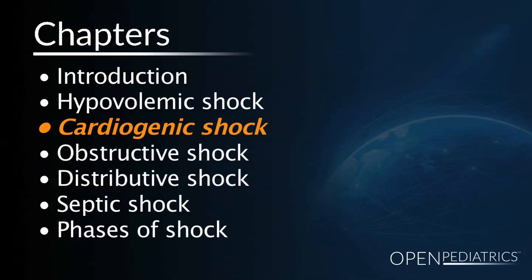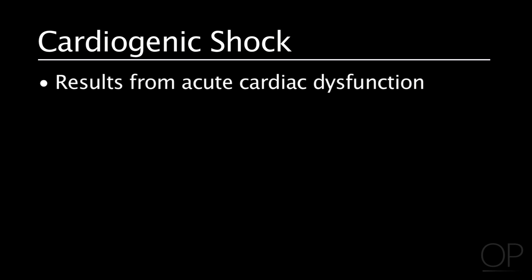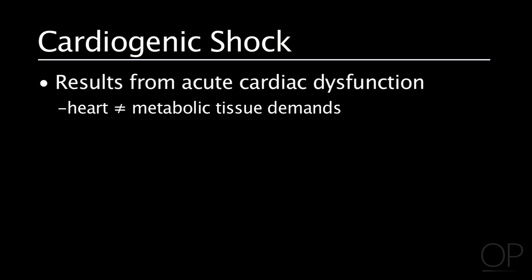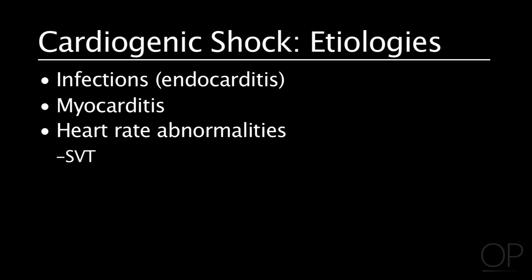The next type of shock is cardiogenic shock, which results from acute cardiac dysfunction, which makes the heart unable to meet the metabolic demands of the tissue. Common etiologies include infectious causes and myocarditis, heart rate abnormalities — frequently SVT or ventricular arrhythmia can result in cardiogenic shock.